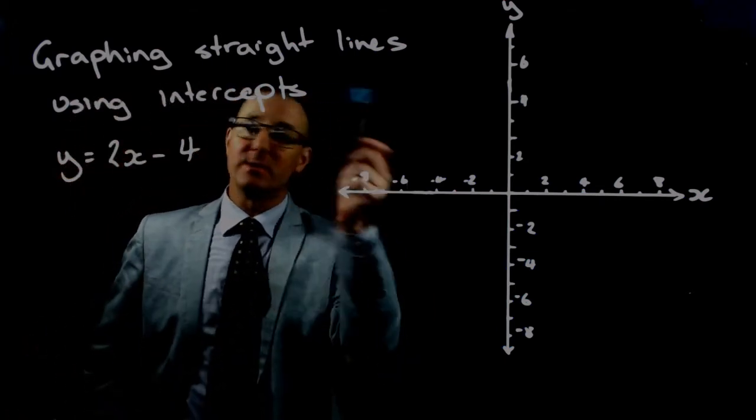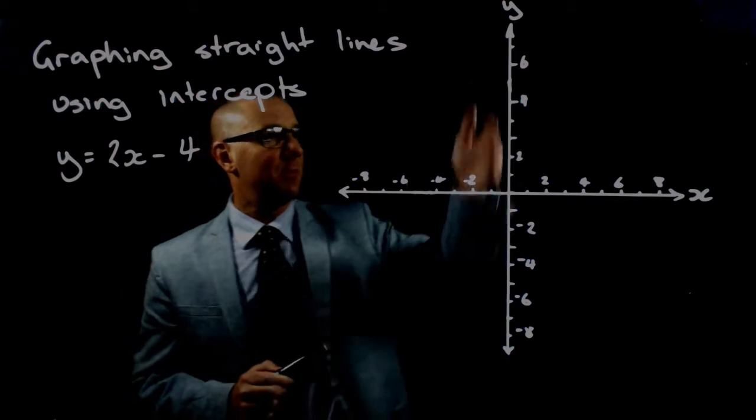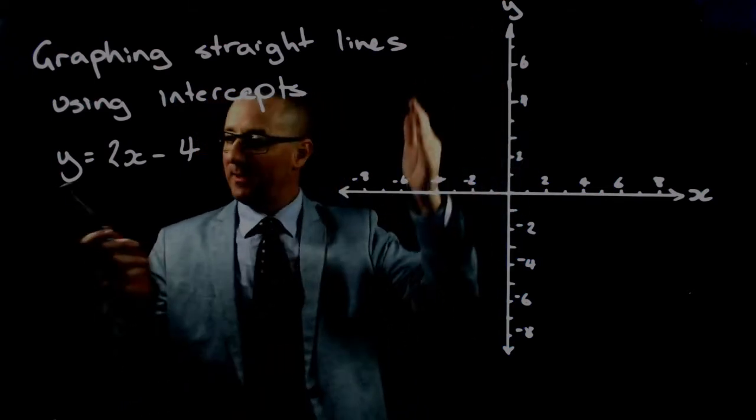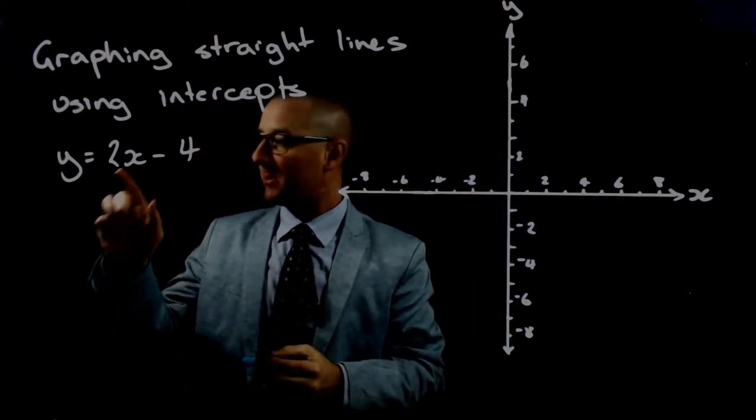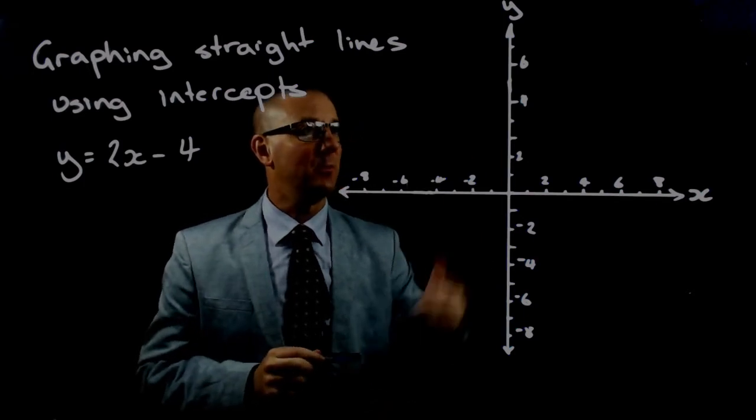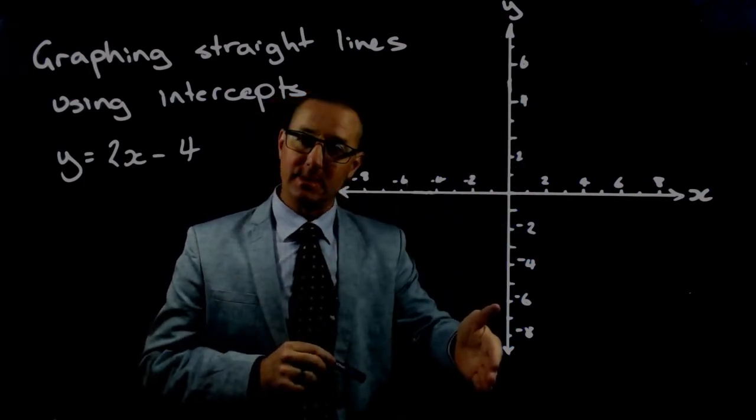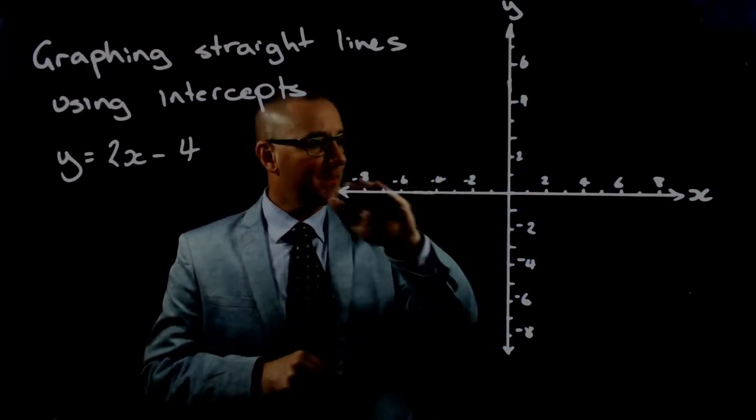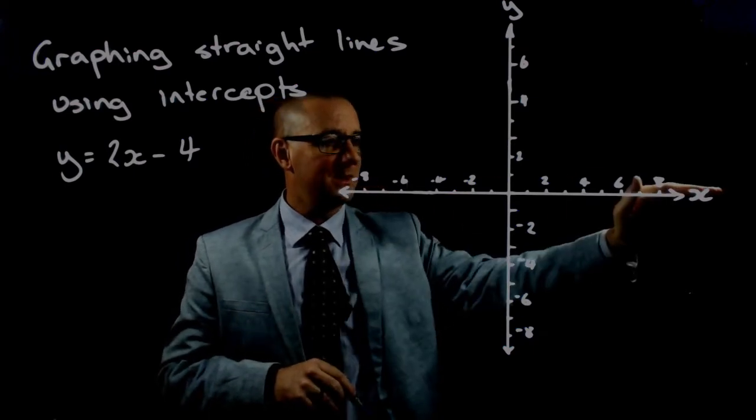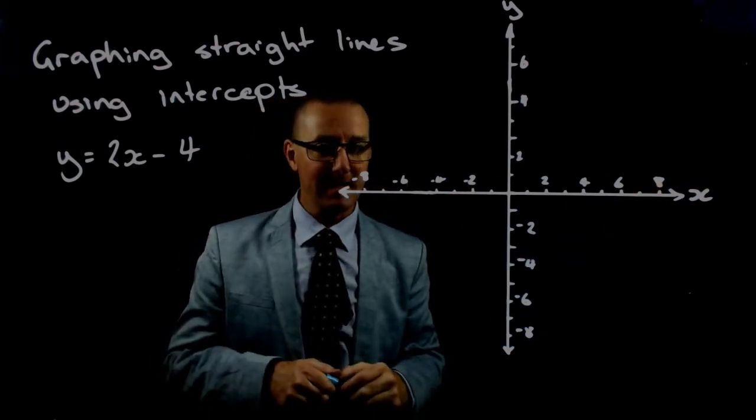This is the second demonstration of graphing straight lines using intercepts. We're finding the value of our equation. This time my equation is y equals 2x minus 4, when x equals 0 to find the y-intercept, and when y equals 0 to find the x-intercept.